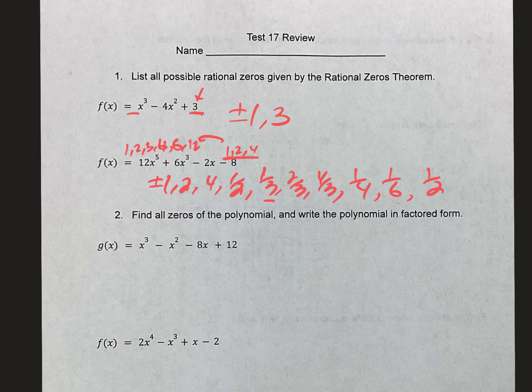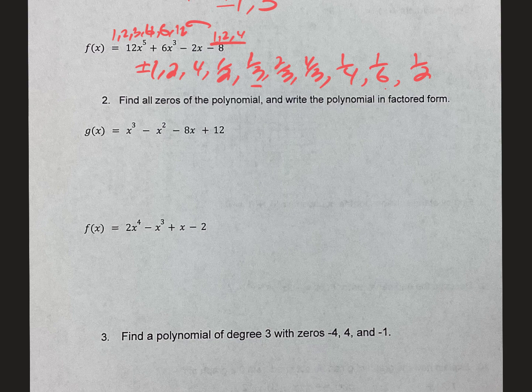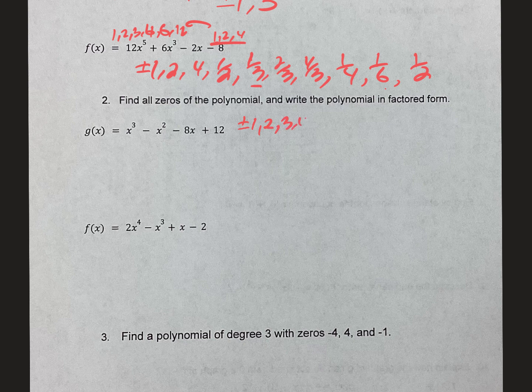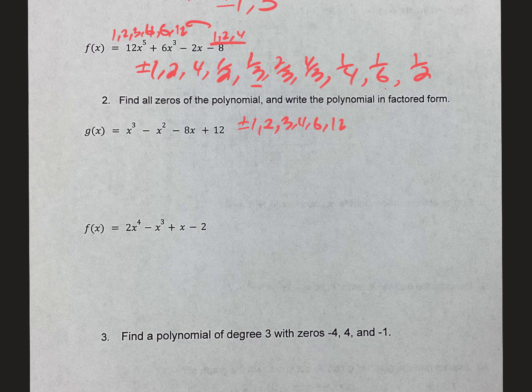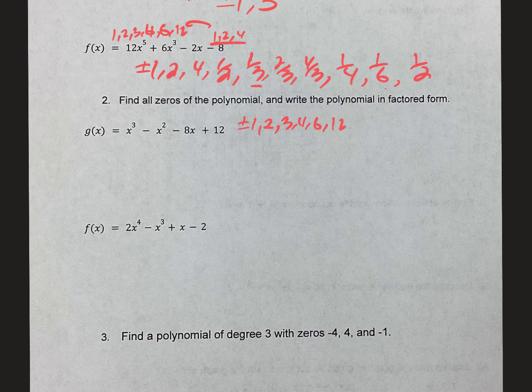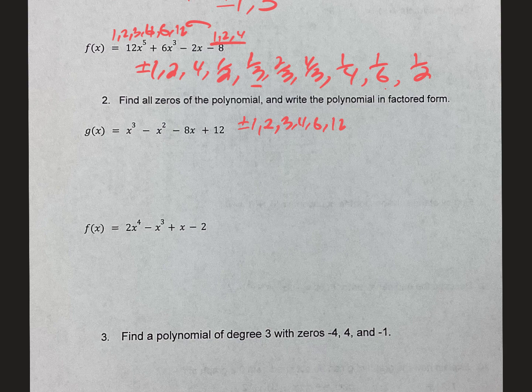Number 2 says find all the zeros. We're going to start this the same way, let's make our list. The factors of 12 are 1, 2, 3, 4, 6, 12. The first number is 1, so just all over 1. What I'm going to do is I'm going to punch in my calculator and see which one of those may work. I went to y equals and punched in that equation and graphed it to see where the x-intercepts are solutions.